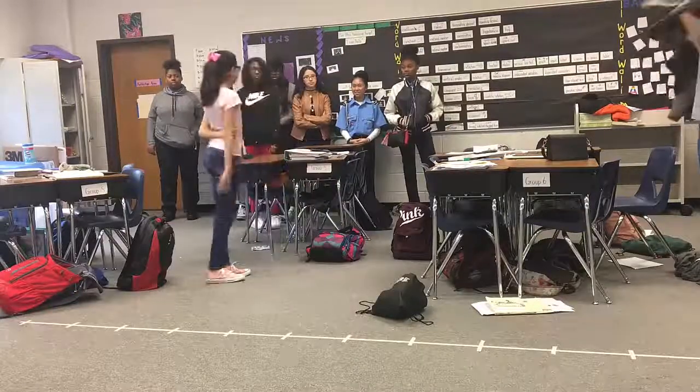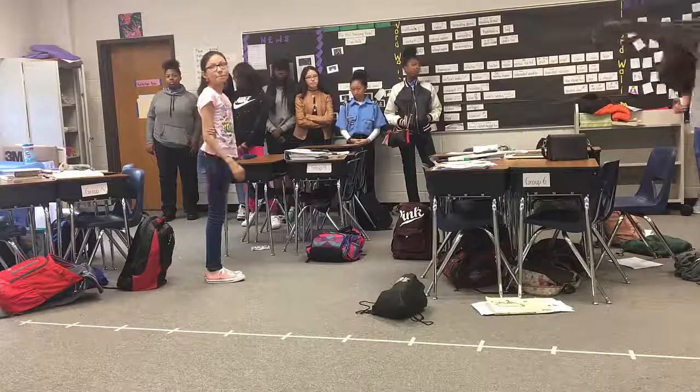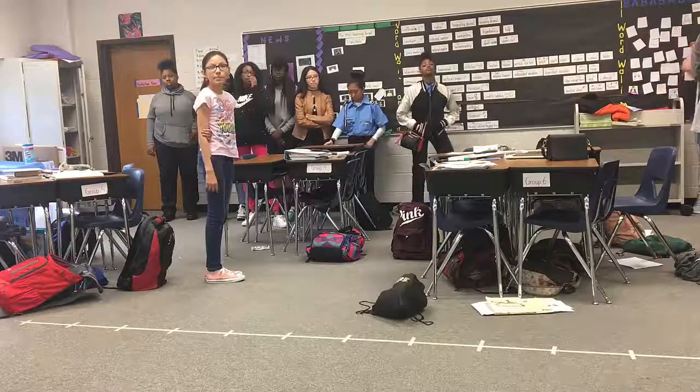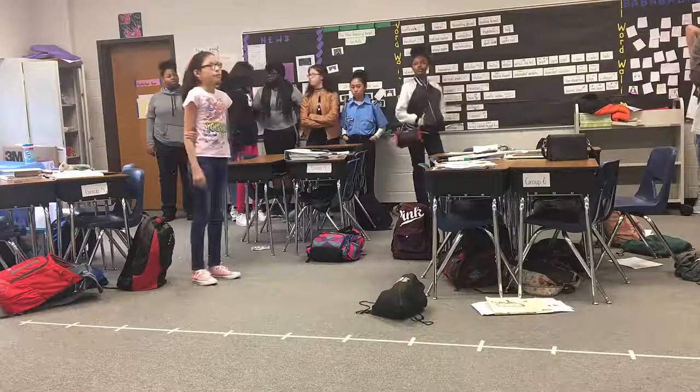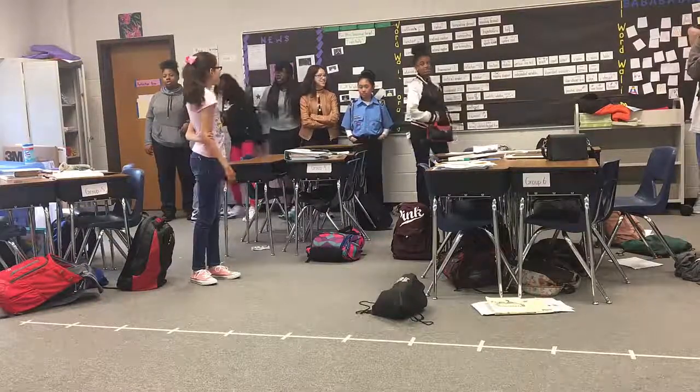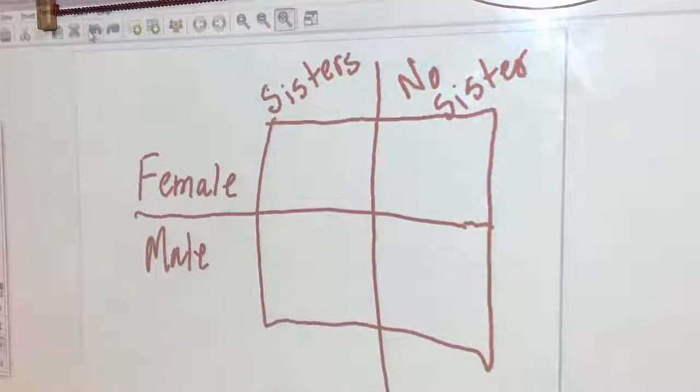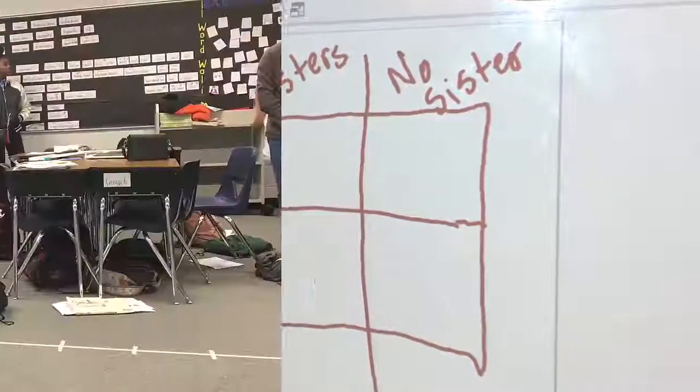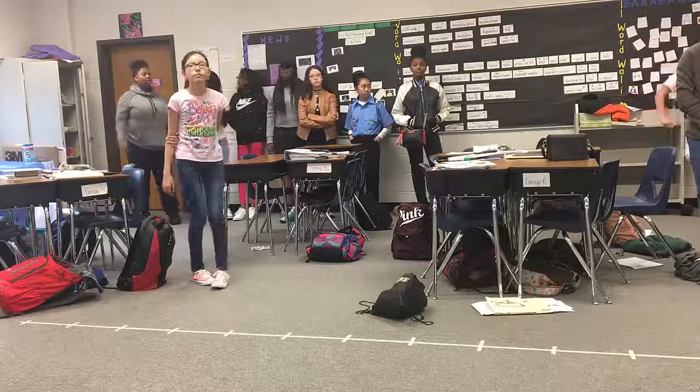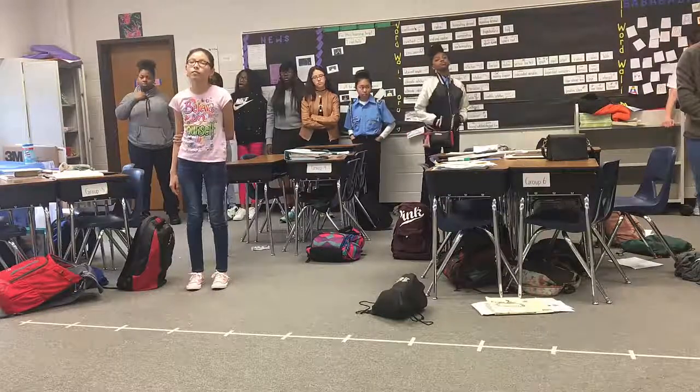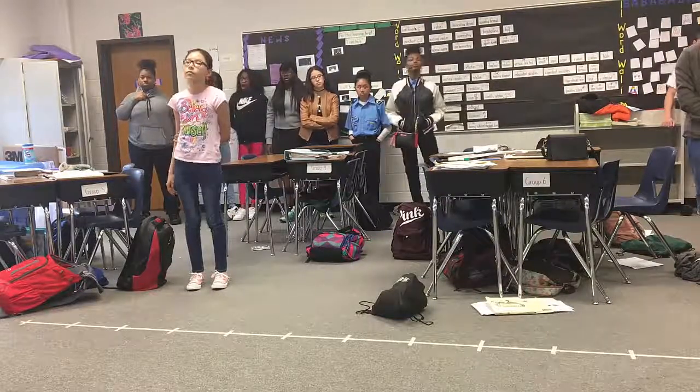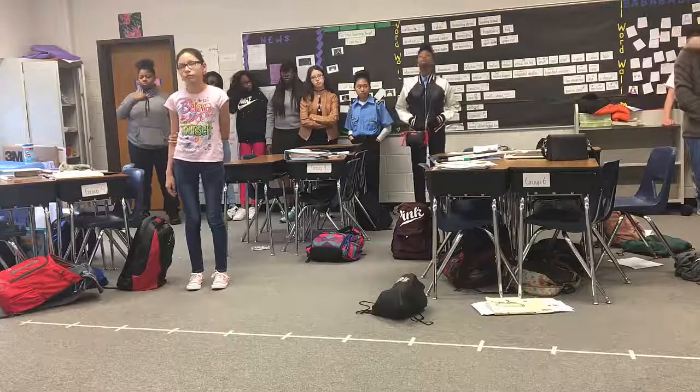Of the two categories that we started with, I've just split you all into two more categories. What were those two categories? Sisters and no sister. Okay, so each of my two categories I split into that, and what I've just created is called a two-way table. So we started off with our two categories of male and female, and then we split those two categories into having sisters and no sisters.